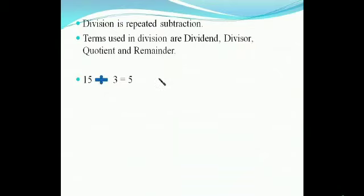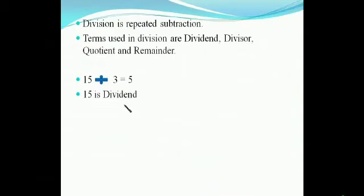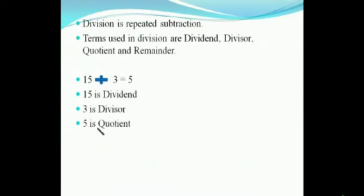I will explain each term. Here, 15 divided by 3 is equal to 5. So 15 is the dividend, 3 is the divisor, 5 is the quotient, and 0 is the remainder.